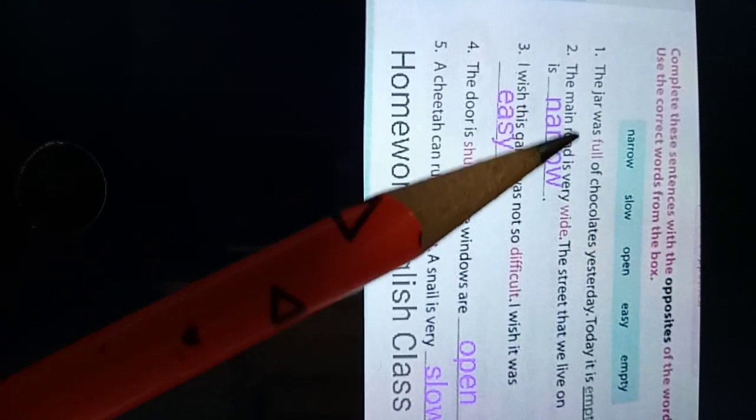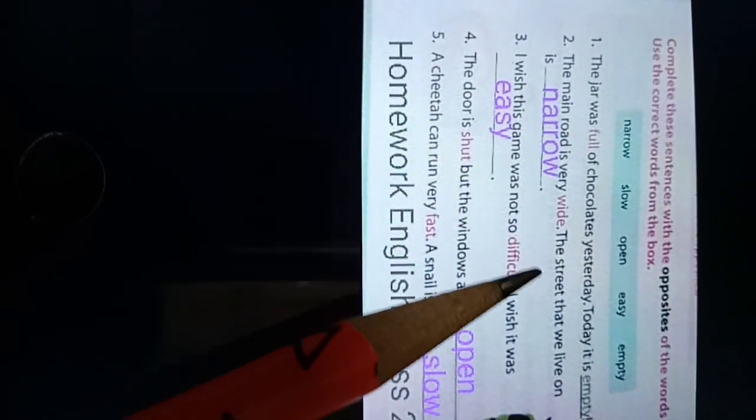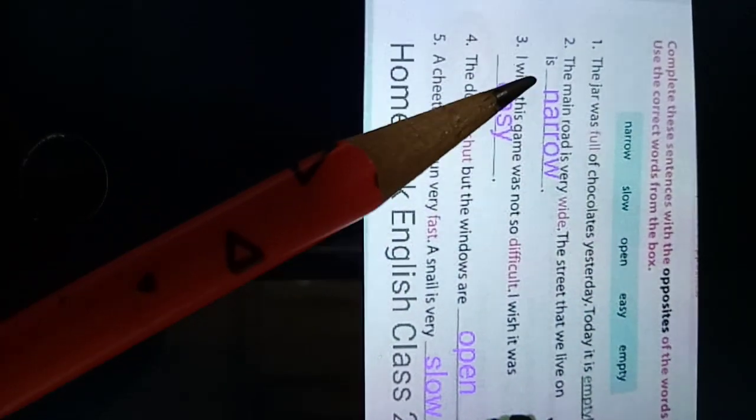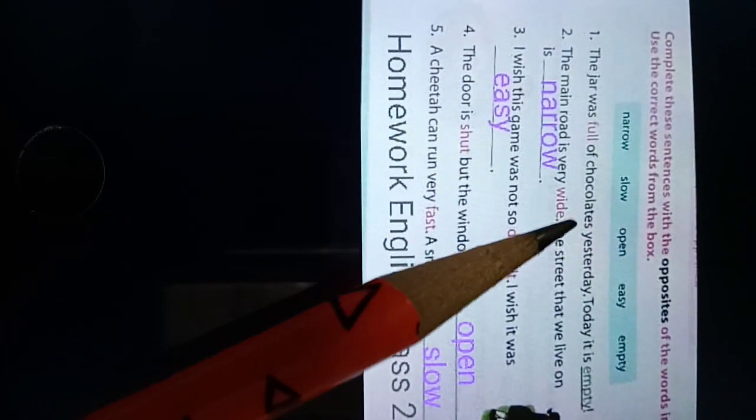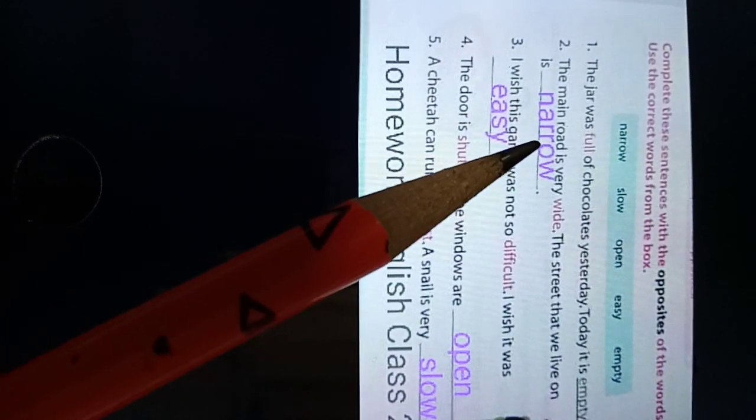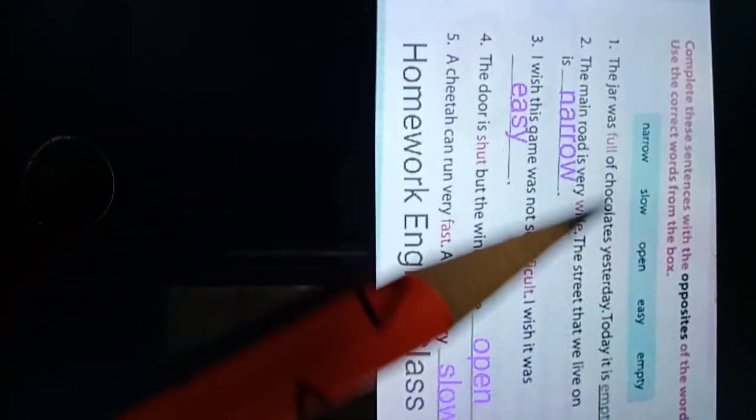Number 2. The main road is very wide and the streets that we live on is narrow. Wide means wide, broad, spacious and narrow means thin, narrow. Opposite.